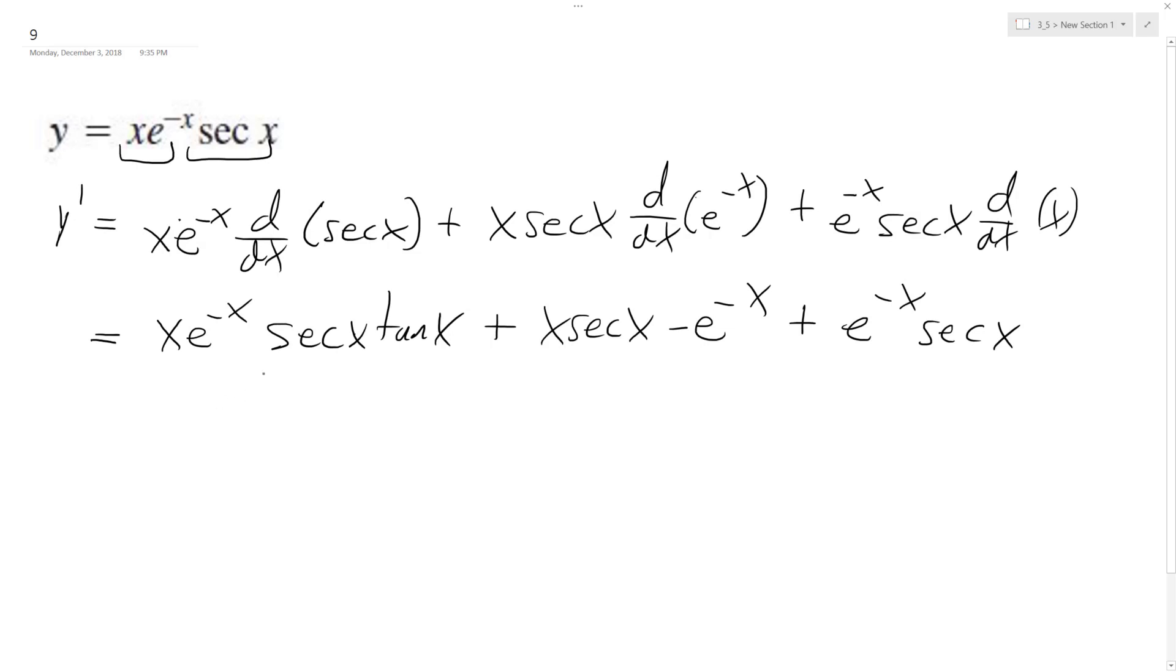And if you notice, all of these contain secant x and e^(-x), so we can pull that out. We get ultimately e^(-x) secant x, and when we pull that out,